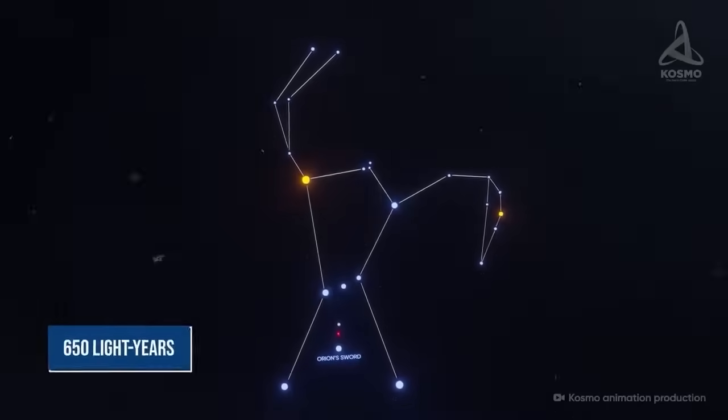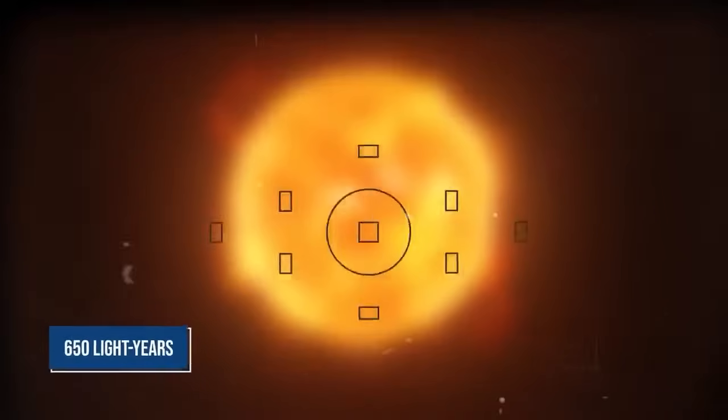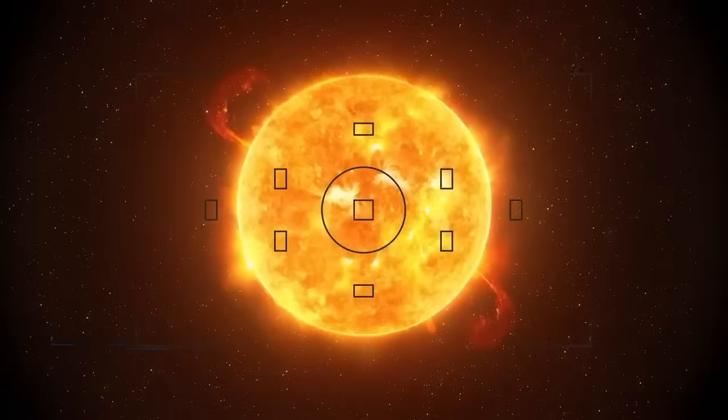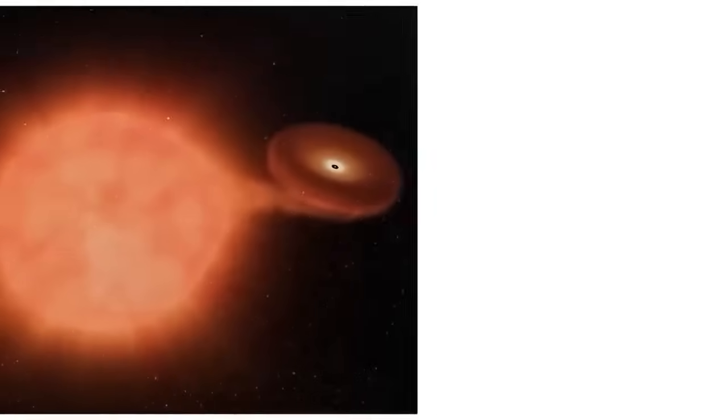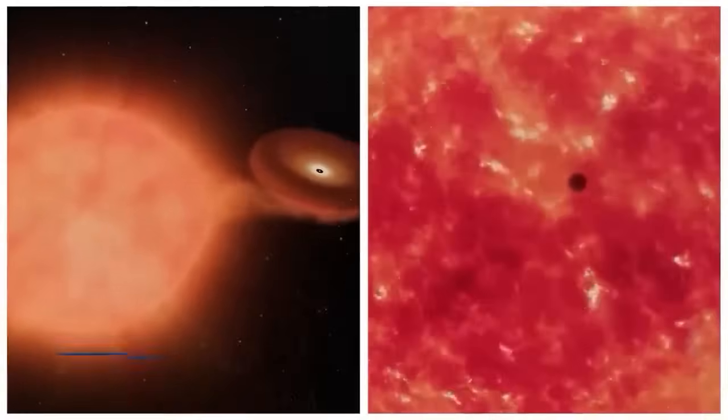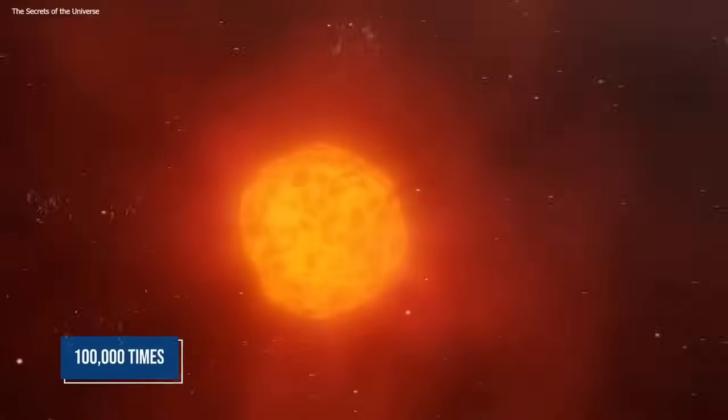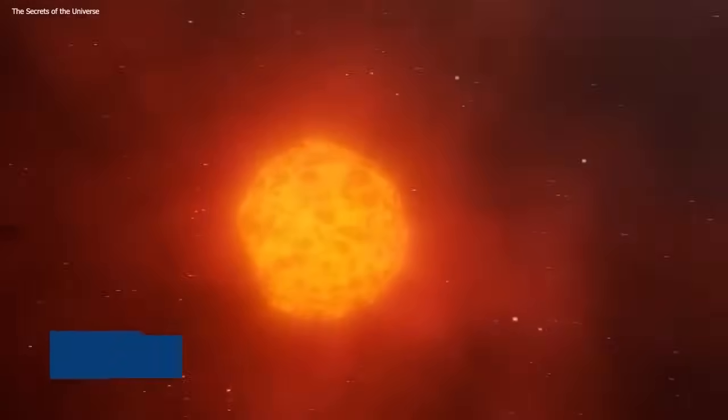Located approximately 650 light years from Earth in the constellation Orion, Betelgeuse is not just any regular star. It's a red supergiant, one of the most luminous stars known to us, shining with a brightness over 100,000 times that of our sun. But why does this red giant matter so much to us?